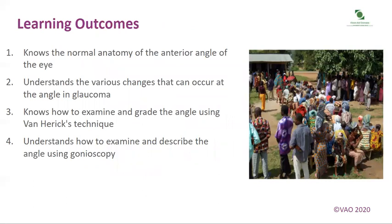Make sure that you have achieved the learning outcomes on this module: that you know the normal anatomy of the anterior angle of the eye; that you understand the various changes that can occur at the angle in glaucoma; that you know how to examine and grade the angle using Van Herrick's technique; and that you understand how to examine and describe the angle using gonioscopy.